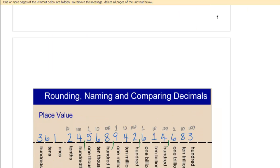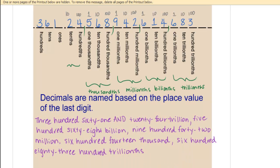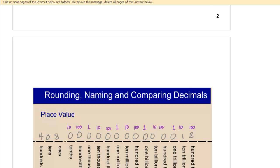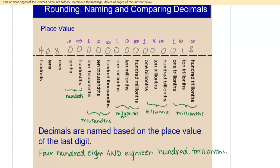Now try writing out this decimal in words. I've put some commas in here to help you out — they don't really belong there, but it will help you to read it correctly. You should end up with 361 and 24,568,942,614,683 hundred-trillionths. You always want to say whatever is the last place value when you end in a decimal. Try this next problem. Write it out — you'll end up with 408 and 1,800 trillionths.